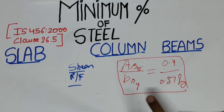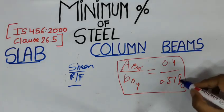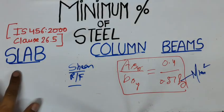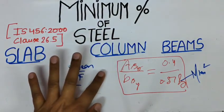So ASV is the total cross-sectional area of stirrup legs effective in shear. SV is the stirrup spacing along the length of the member. B is the breadth of beam or the breadth of the web of flanged beam, and FY is the characteristic strength of the stirrup reinforcement in Newton per mm square. This value shall not be greater than 450 Newton per mm square. So this is the whole complete minimum shear reinforcement for the slab, for the column, and for the beam.